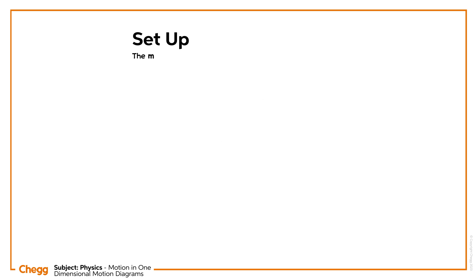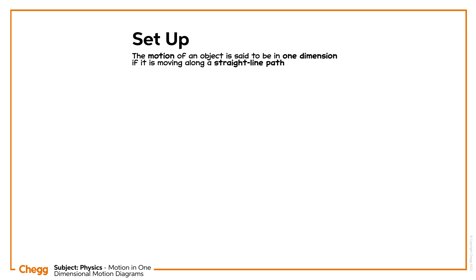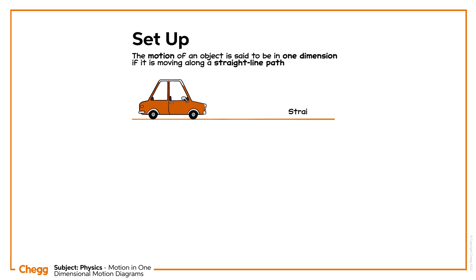The motion of an object is said to be in one dimension if it is moving along a straight line path. The motion of a car along a straight road is an example of one-dimensional motion.